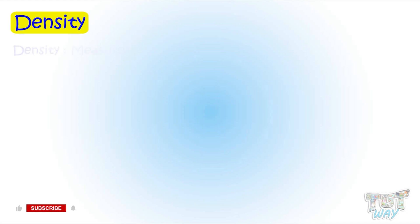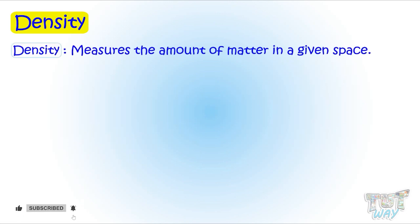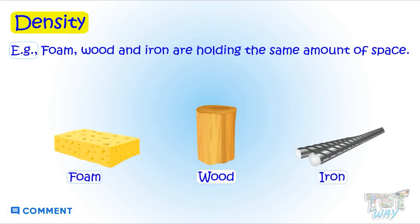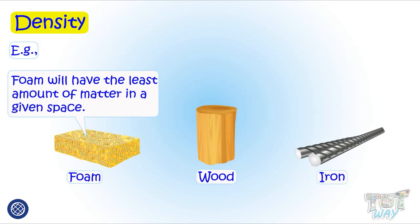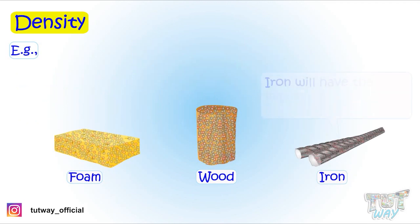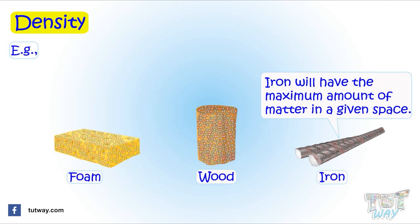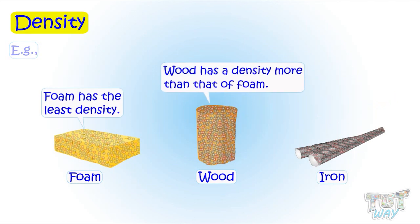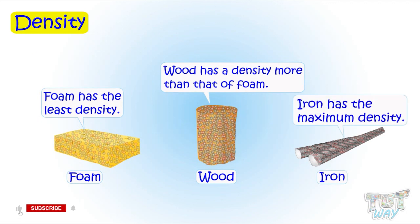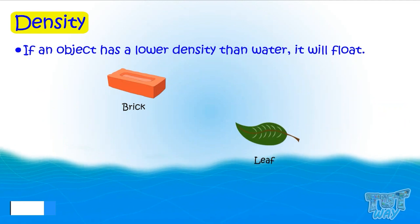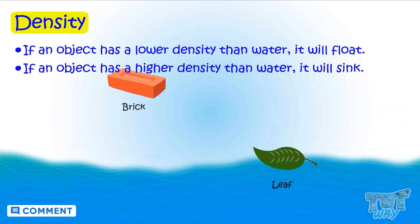Now let's learn about density. Density measures the amount of matter in a given space. For example, foam, wood, and iron may occupy the same amount of space, but foam has the least amount of matter, wood has more than foam, and iron has the maximum. So foam has the least density, wood has more than foam, and iron has the maximum density. If an object has a lower density than water, it will float; if it has a higher density than water, it will sink.